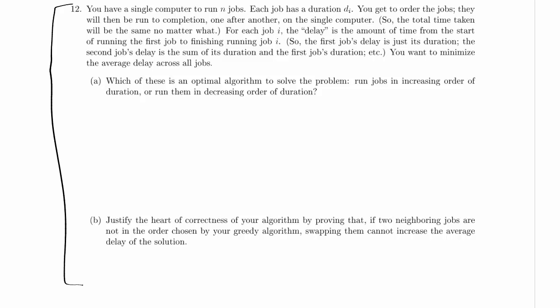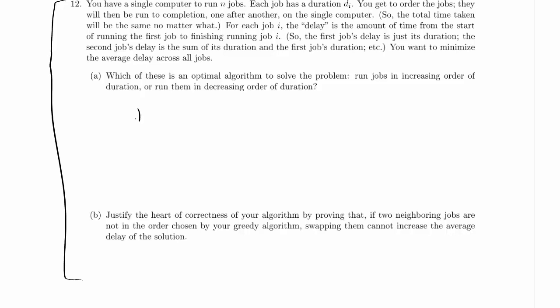So the first question is, which of these is an optimal algorithm to solve the problem? Run the jobs in increasing order of duration or run the jobs in decreasing order of duration? Well, if you believe that one or the other of these is optimal, a good way to check this is just to try some small examples. So let's try it with two jobs. Job 1 has duration D1 equal to 1, and then job 2 has duration D2 equal to 2.